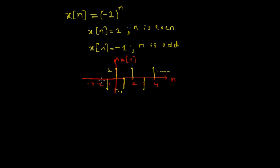For n = -1, x[n] = -1. For n = -2, it is 1. For n = -3, the signal is -1, and so on. If you look at this signal, there is clearly a pattern and it keeps repeating.